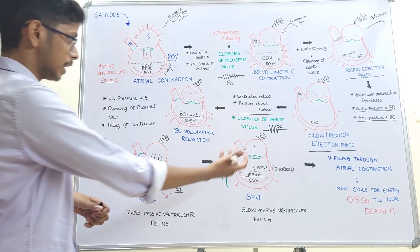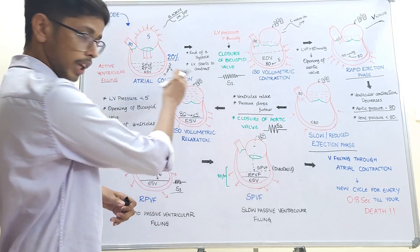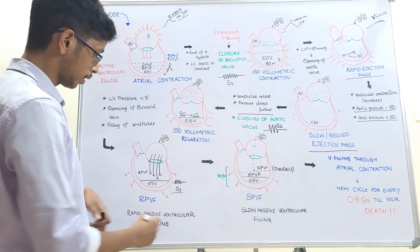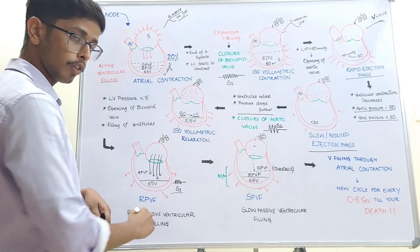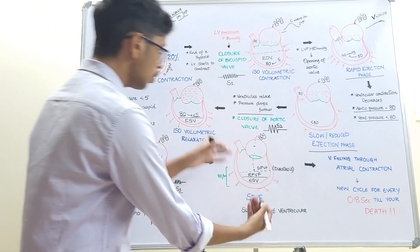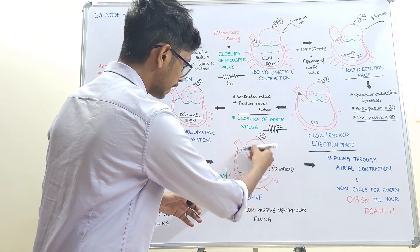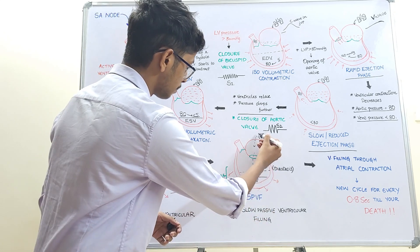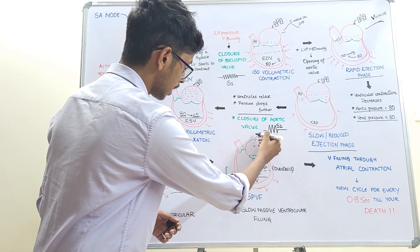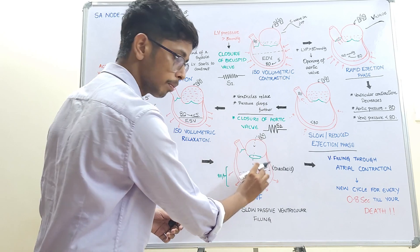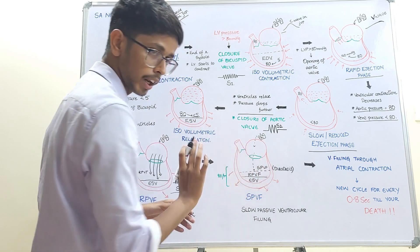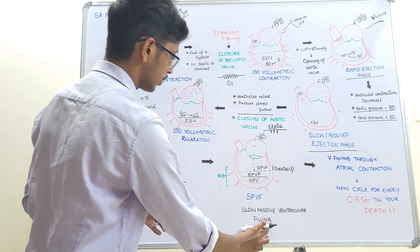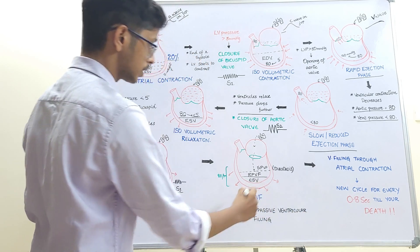After the rapid passive ventricular filling, the blood that was collected in the atria has already entered the ventricle. Now the atria act as a conduit — just like a pipe. Blood coming from the lungs moves through the atria and falls into the ventricle. This phase is called slow passive ventricular filling, as the filling is slow during this phase.